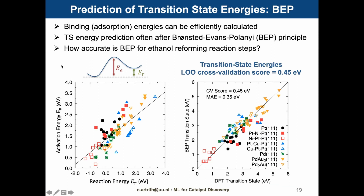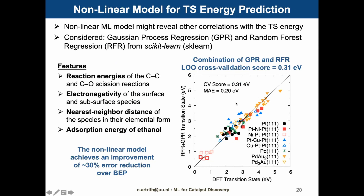So we can now parameterize and validate our BEP methods for the predictions of transition state energies. It is assumed that the activation energies are proportional to the reaction energies. Here on the left, you see the activation energies of CC and CO breaking reactions on different catalyst surfaces plotted against reaction energies. We use leave-one-out cross-validation, and the plotted points are predicted by the BEP method fitted on all other data points. The correlation is not bad, but also not great. Converted to transition state energies, the cross-validation error estimate is 0.45 eV. The BEP model is not too bad, but we were curious if we can do better with a complex nonlinear machine learning model.